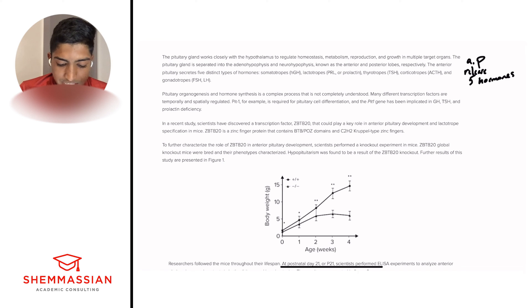Let's go on to the next paragraph. Pituitary organogenesis and hormone synthesis is a complex process that is not completely understood. Many different transcription factors are temporarily and spatially regulated. PIT1, for example, is required for pituitary cell differentiation, and the PIT1 gene has been implicated in growth hormone, TSH, and prolactin deficiency. So here we're asking the same question: what's happening? Oftentimes we struggle because it's complicated, there's a lot of details. I like to use the first sentence as a topic sentence. So it's just saying pituitary genesis equals complex. It gives us detail about PIT1, but we're not focusing on the details. This is a roadmap.